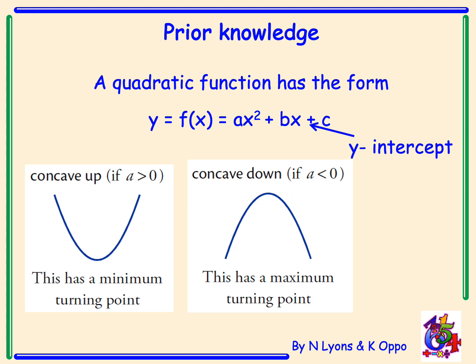The number at the end, the c value, is the y-intercept. Just like in straight lines, this is the point where our function is going to cross the y-axis.